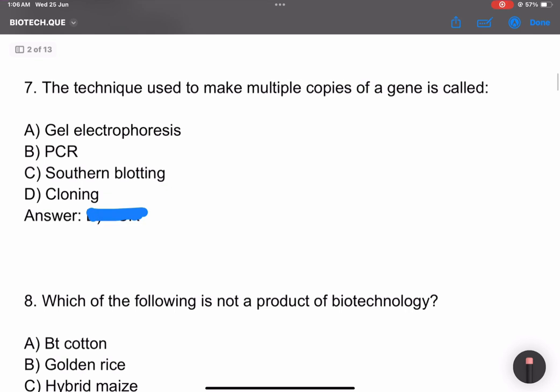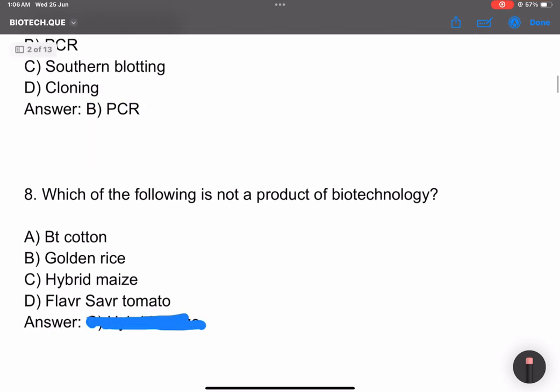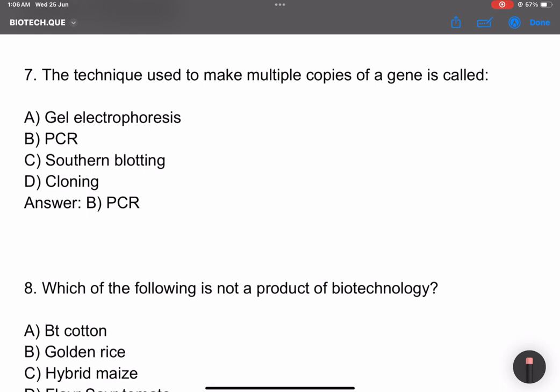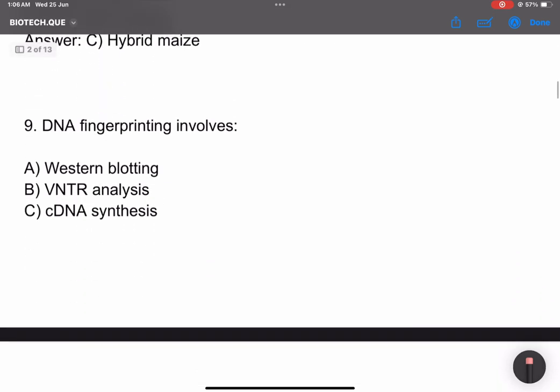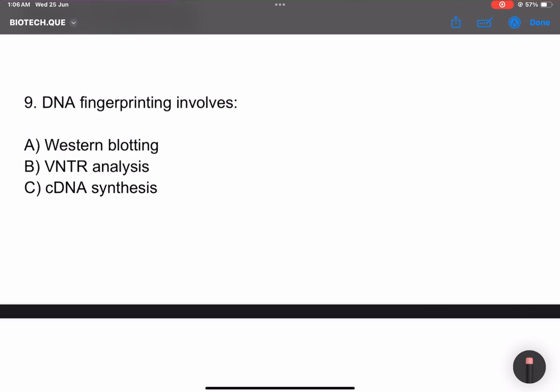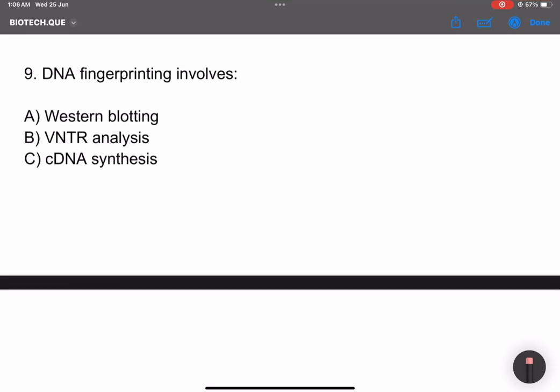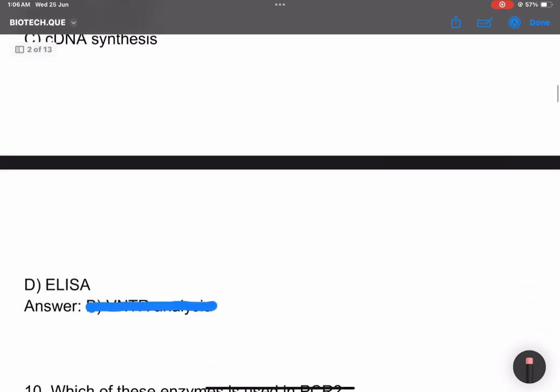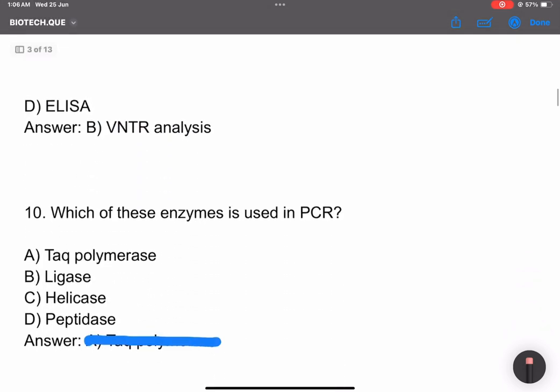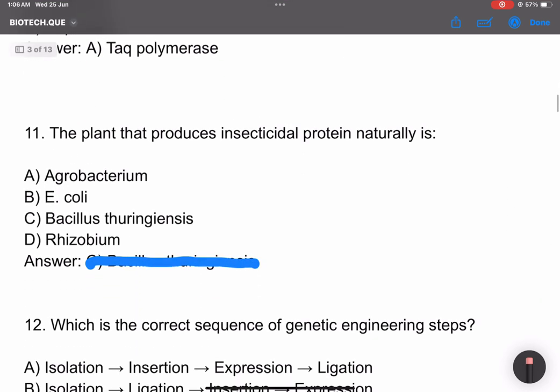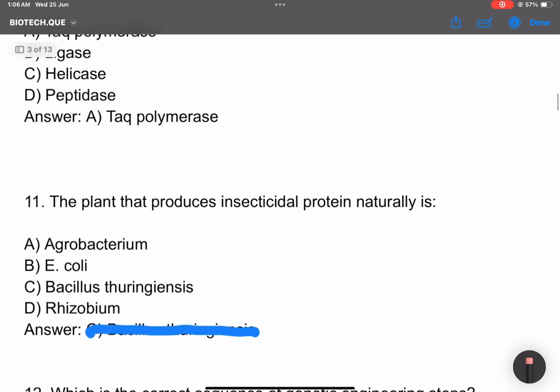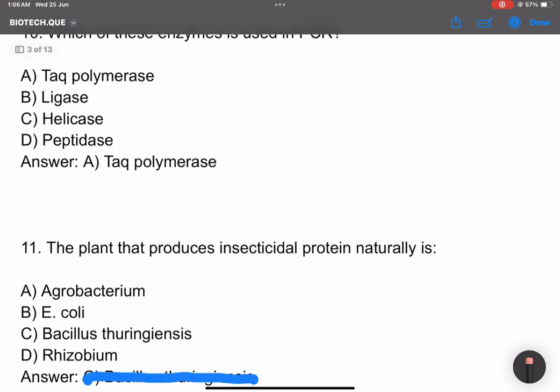Question 6: Which of these is a biofertilizer? Rhizobium. The technique to make multiple copies of a gene is called PCR. PCR is about amplification. Question 8: Which of the following is not a product of biotechnology? Hybrid maize is not a flavr savr tomato biotechnology product.